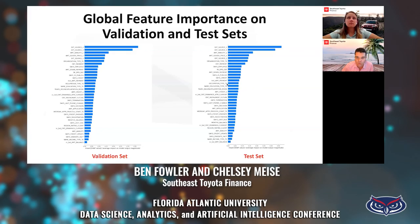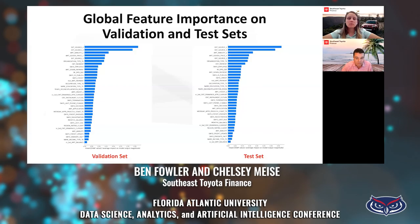You'll notice some features with the underscore TE — Chelsea talked about target encoding earlier, one of the feature engineering techniques we applied. An example is the occupation type TE feature, where different categorical values received different target-encoded values. Drivers had a default rate of about 11.1%, where accounts had a default rate of 3.6%. By providing that default rate information to the model, target encoding is one of the most powerful feature engineering techniques you can do on categorical data.